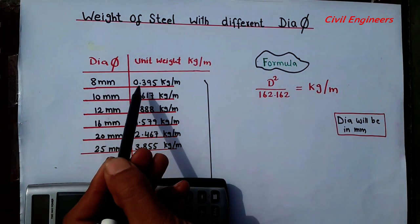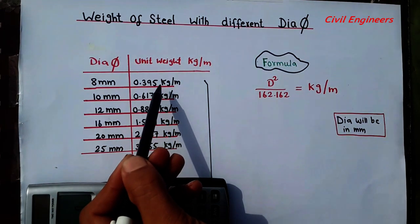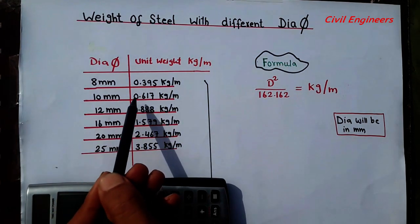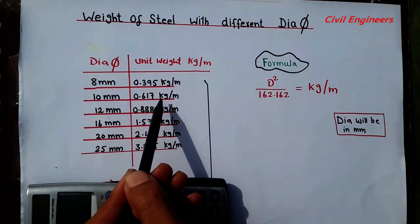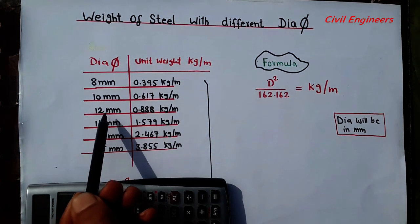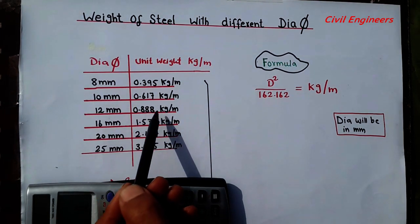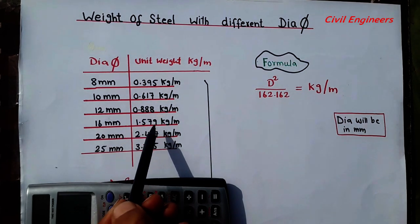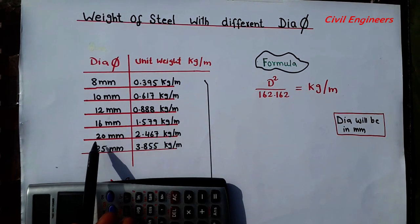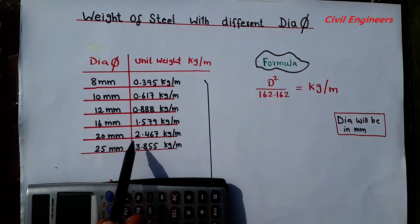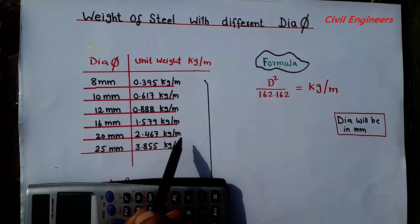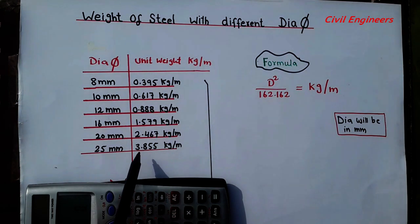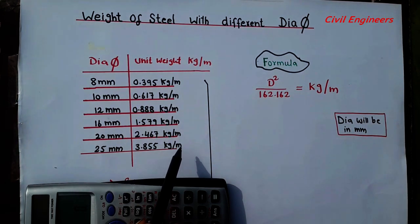For the 8 millimeter we have unit weight 0.395 kg per meter. For the 10 mm, 0.617 kg per meter. For the 12 mm, 0.88 kg per meter. For the 16 mm we have 1.579 kg per meter. And for the 20 mm we have 2.467 kg per meter. For the 25 mm we have the unit weight of steel 3.855 kg per meter.